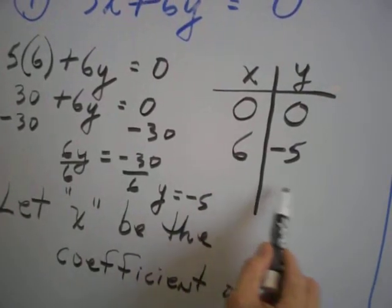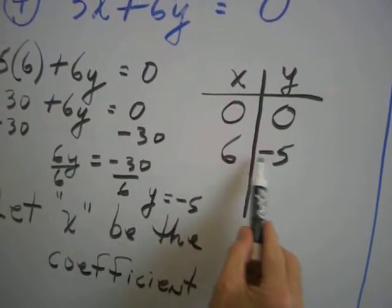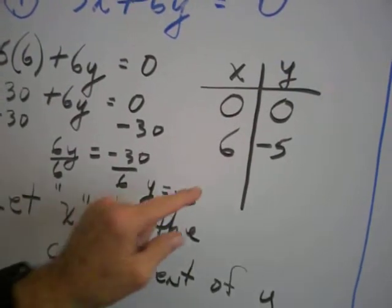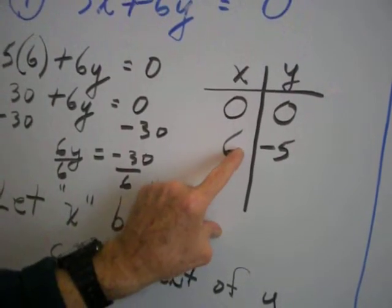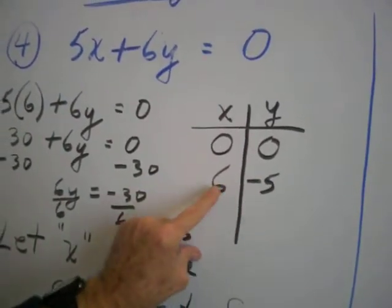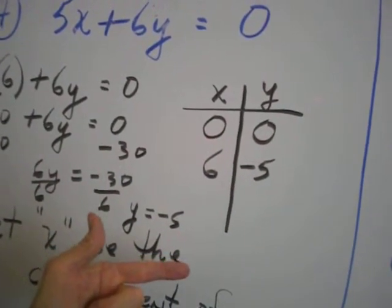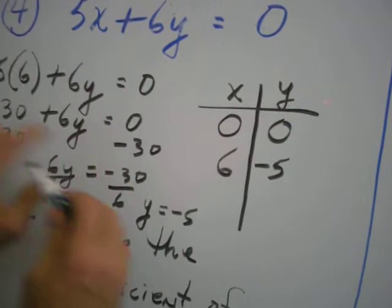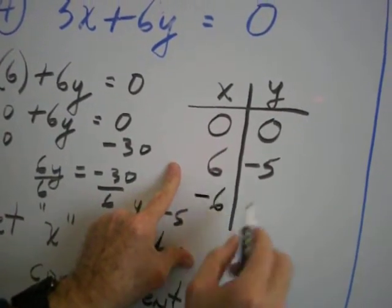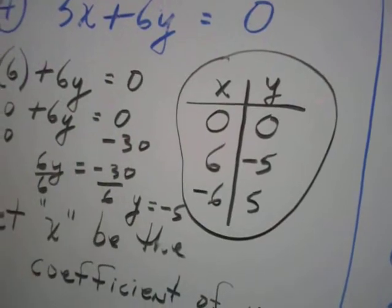Now here's the trick — write this down. Once you have gotten your second ordered pair, to get your third solution, just take the X and Y values you just found and change each one of them to their opposite. No work — just change them to their opposite. Make the 6 a negative 6 and the negative 5 a positive 5, and we'll have our three solutions.